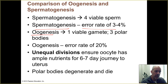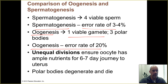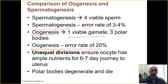With oogenesis, you only end up with one ovum and two to three polar bodies, depending on whether the first polar body divides and completes meiosis. The error rate with oogenesis is about 20%. Usually if there are errors the oocyte is non-functional and won't result in a pregnancy — though sometimes it does. For example, Down syndrome can occur when a sperm fertilizes an egg that results in three copies of chromosome 21 instead of two.